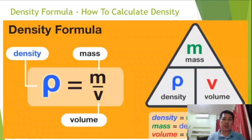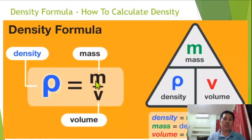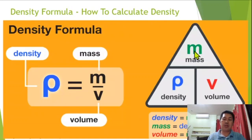Here's the presentation: density formula — how to calculate density. Density is equal to mass over volume. Mass, density, and volume — density equals mass divided by volume.